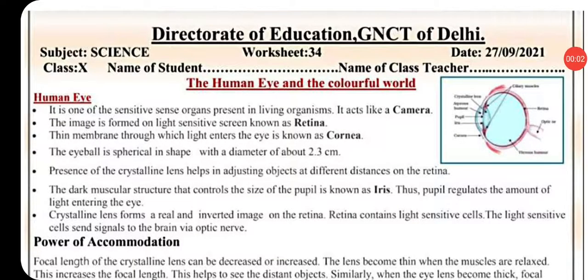Hello dear students, today we will discuss worksheet number 34: the human eye and the colorful world. The human eye is one of the sensitive organs present in living organisms. It acts like a camera. The image is formed on a light-sensitive screen known as the retina. The membrane through which light enters the eye is known as the cornea.